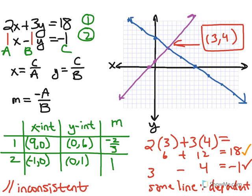And the case we're dealing with here, where the two lines simply intersect at a single point, we call that a consistent system.